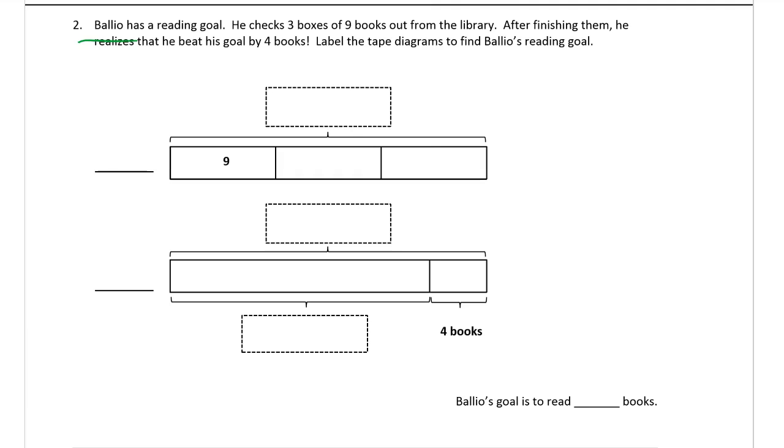Balio has a reading goal. He checks 3 boxes of 9 books out from the library. After finishing them, he realizes he beat his goal by 4 books. Label the tape diagrams to find Balio's reading goal. So 3 boxes of 9 books. What do we know here? This must be the 3: one, two, three boxes. So we know there are 3 boxes. But we don't know how many books yet. Total books.